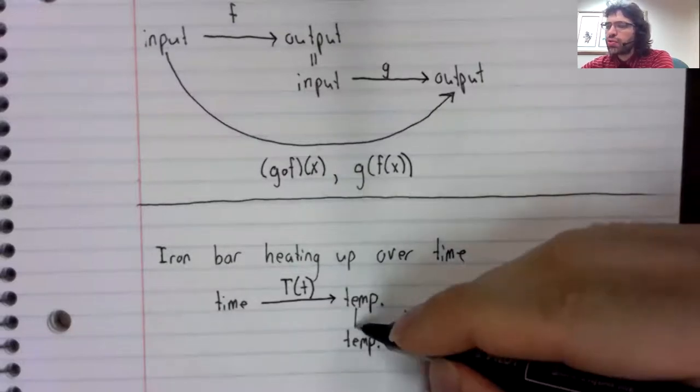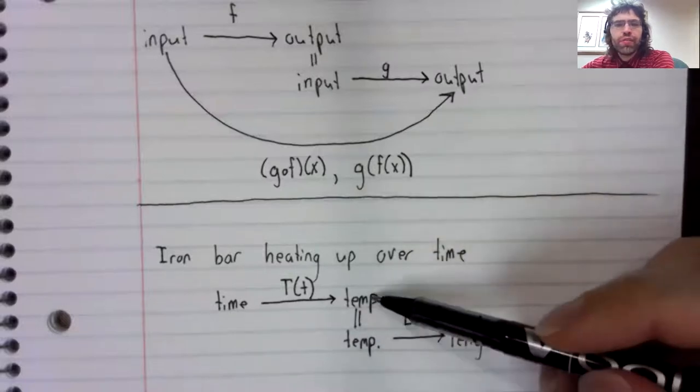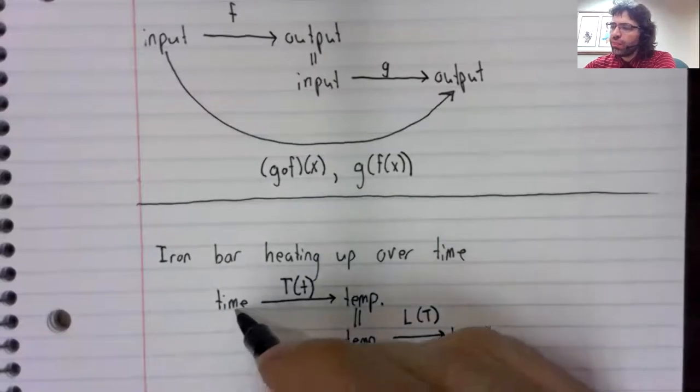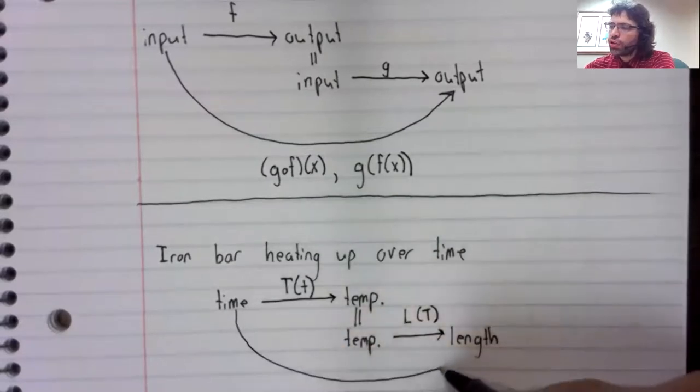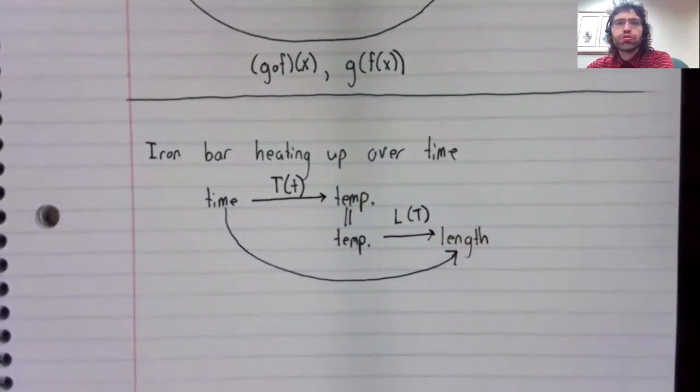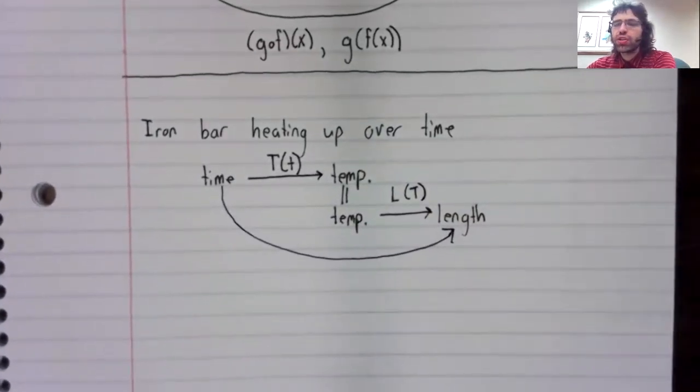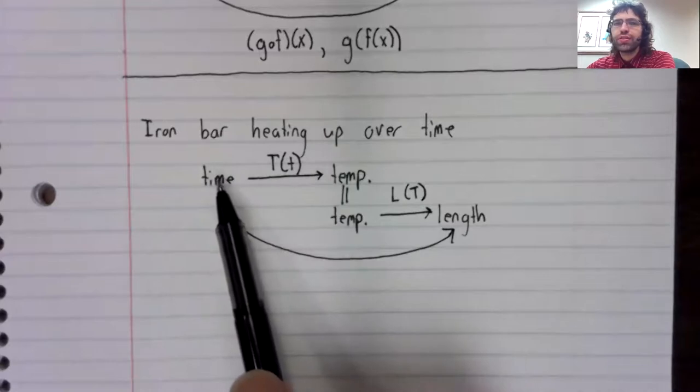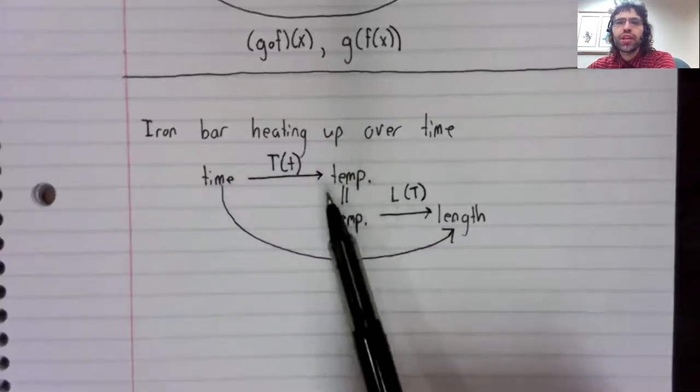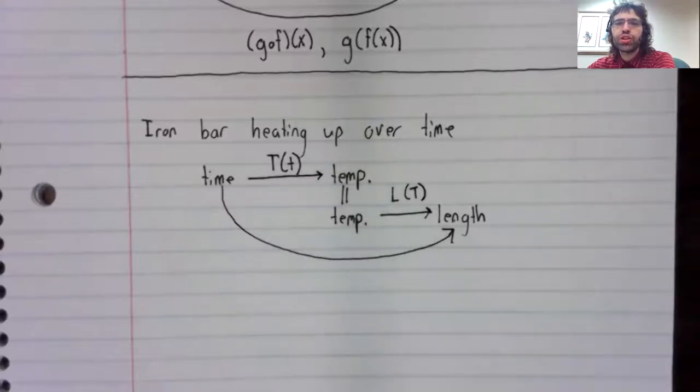And observe that the output of the first function is the input of the second. So if we want to, we can create a new function that goes right from time to length without any reference to temperature.